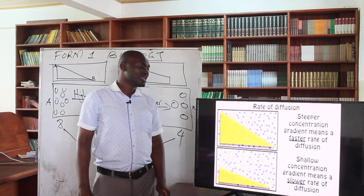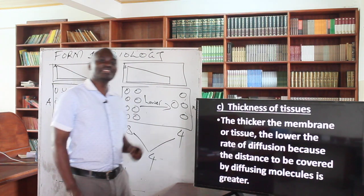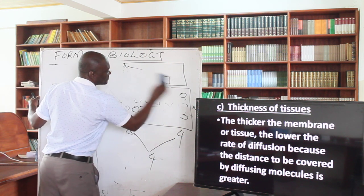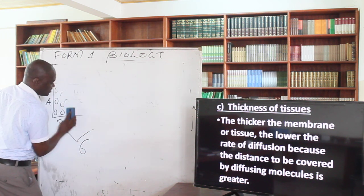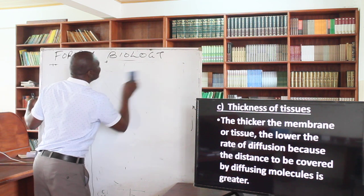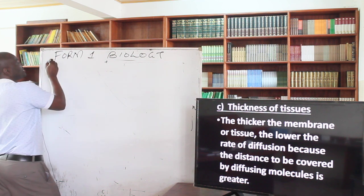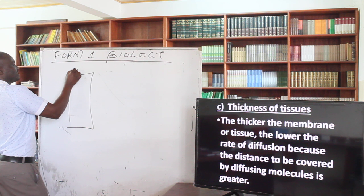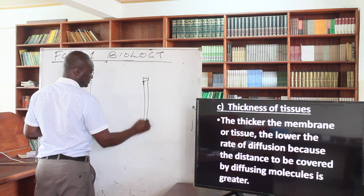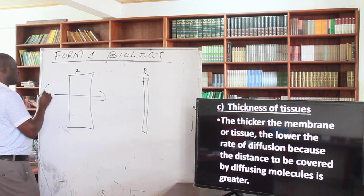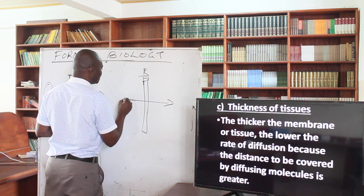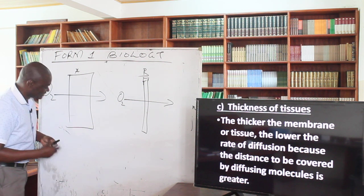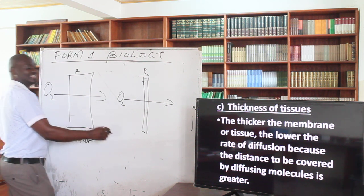That is how concentration gradient affects the rate of diffusion. Our third factor is the thickness of the tissue. Diffusion is a process that occurs both outside and within living organisms. Consider two tissues, A and B, across which oxygen gas is supposed to diffuse. Tissue A is thicker and tissue B is thinner.